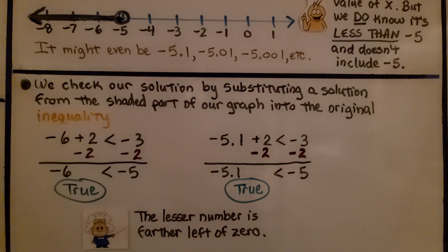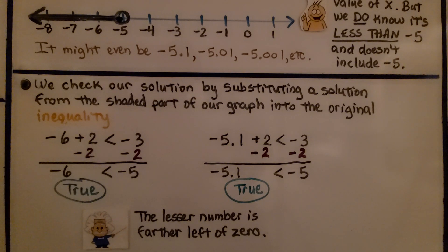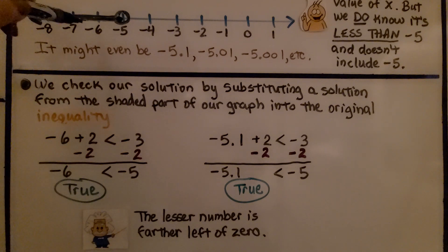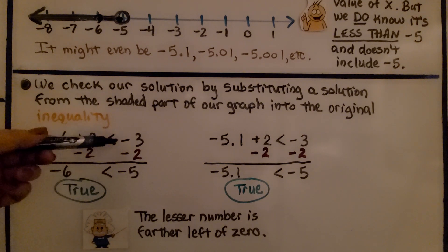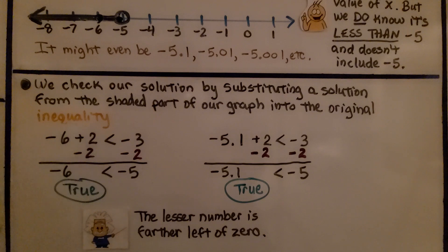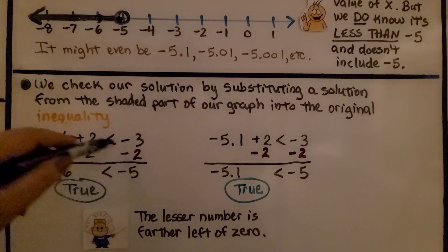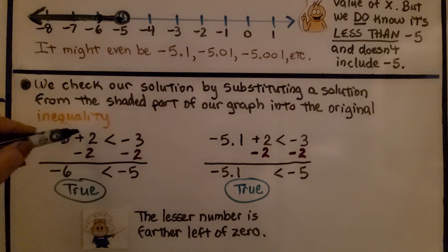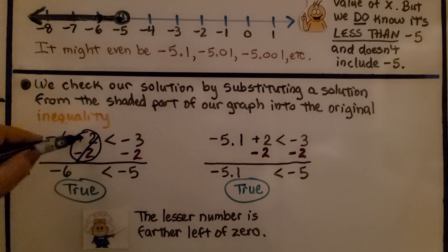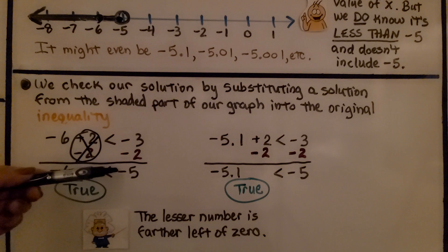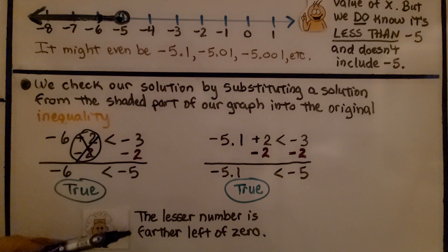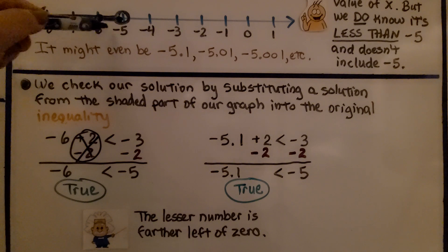We check our solution by substituting a value from the shaded part of the graph into the original inequality. I chose negative 6, which is in the shaded region. Negative 6 plus 2 is less than negative 3. We subtract 2 from each side, eliminating the plus 2, and get negative 6 is less than negative 5. That's true — the lesser number is farther left, so negative 6 is indeed less than negative 5.